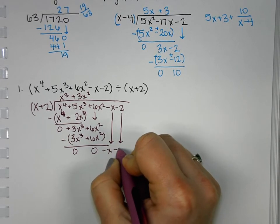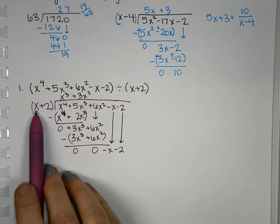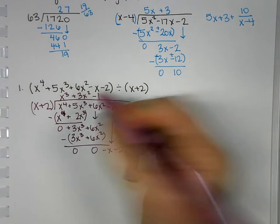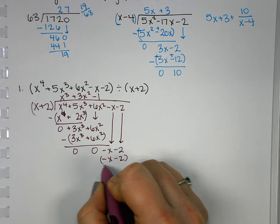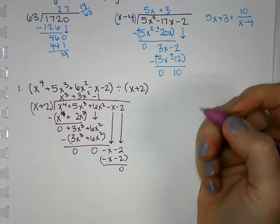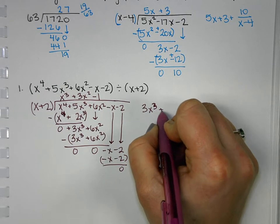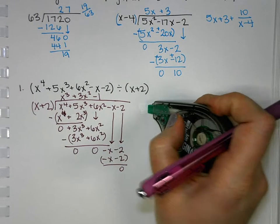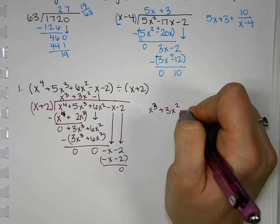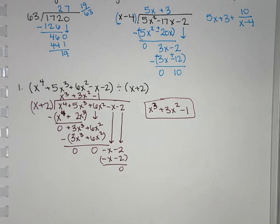So, we'll bring down the next number. And for this polynomial, because I know I have two terms, I'm going to bring down the next two, so I have something to add. So, x times what gives us negative x, negative 1. So, we'll have negative x, negative 2. We subtract. Everything cancels. So, that means we won't have a remainder. This divided evenly and gave us x to the 3rd plus 3x squared minus 1 would be our answer. Meaning, there's no remainder. This divided evenly.